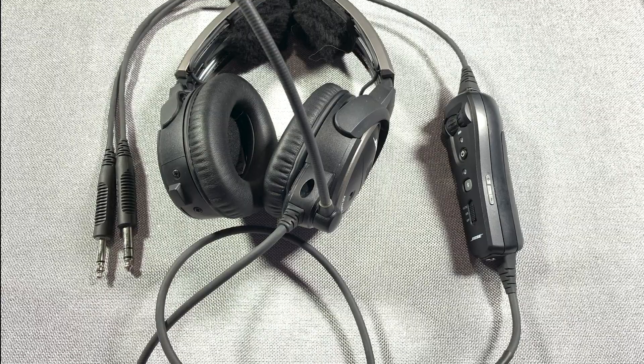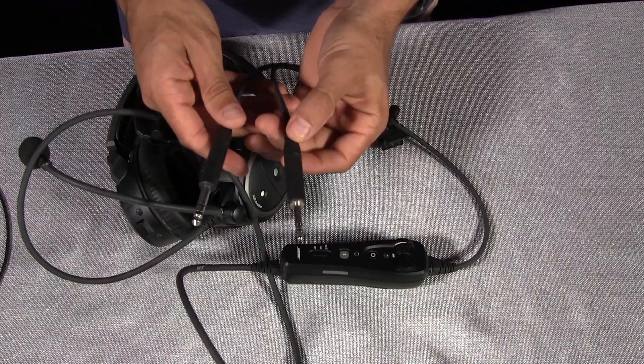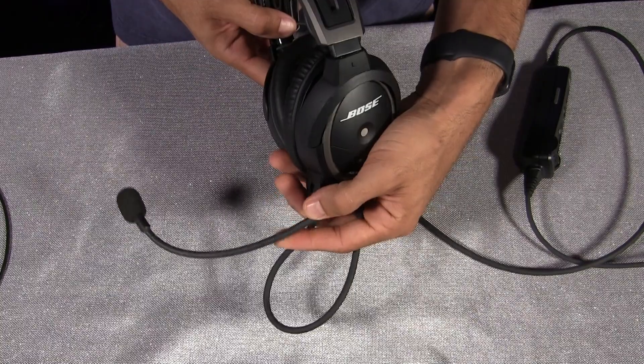Let's look at the parts of the headset so we understand what we need. We need GA dual plugs, a volume adjustment, headphones, and a microphone.